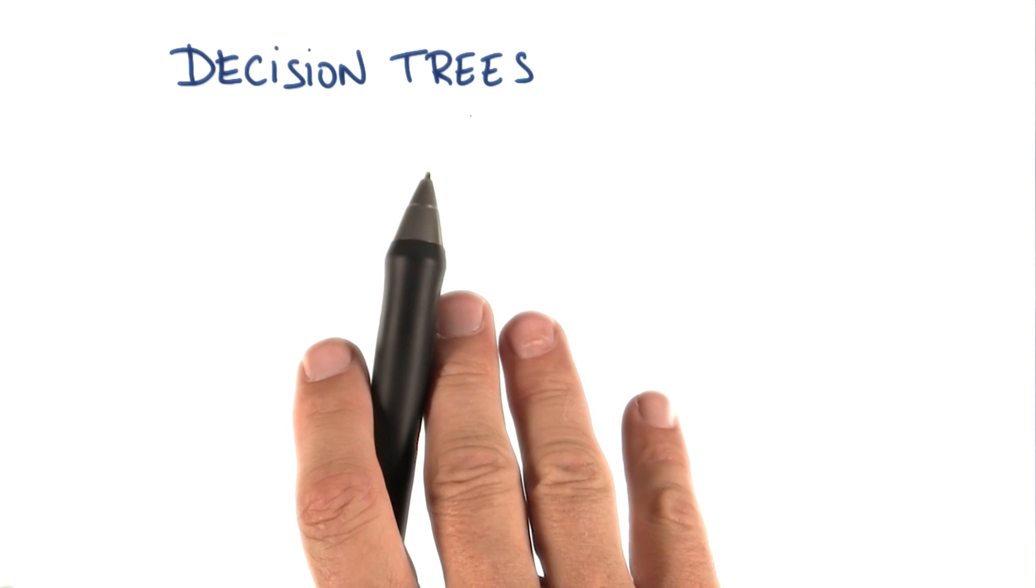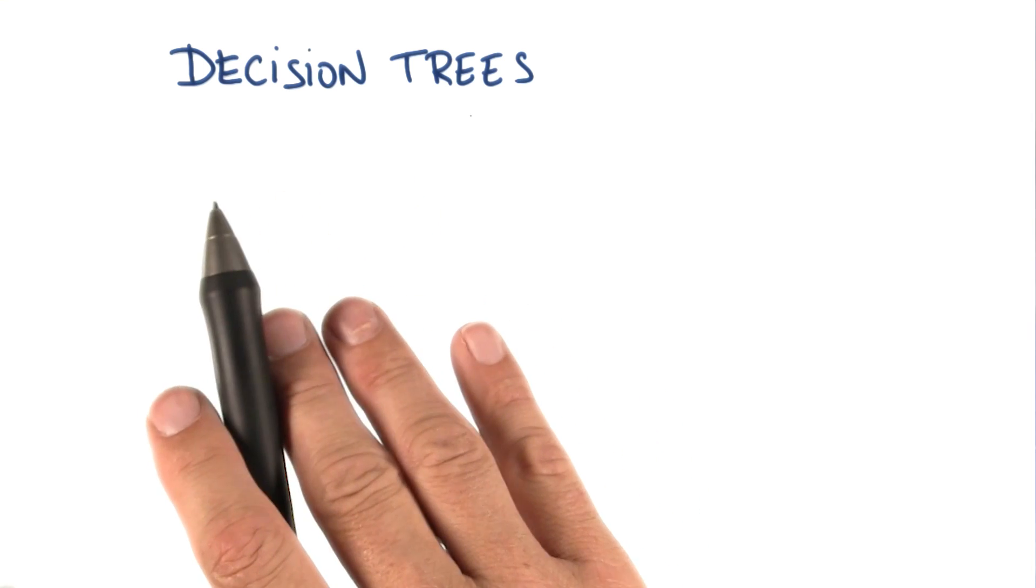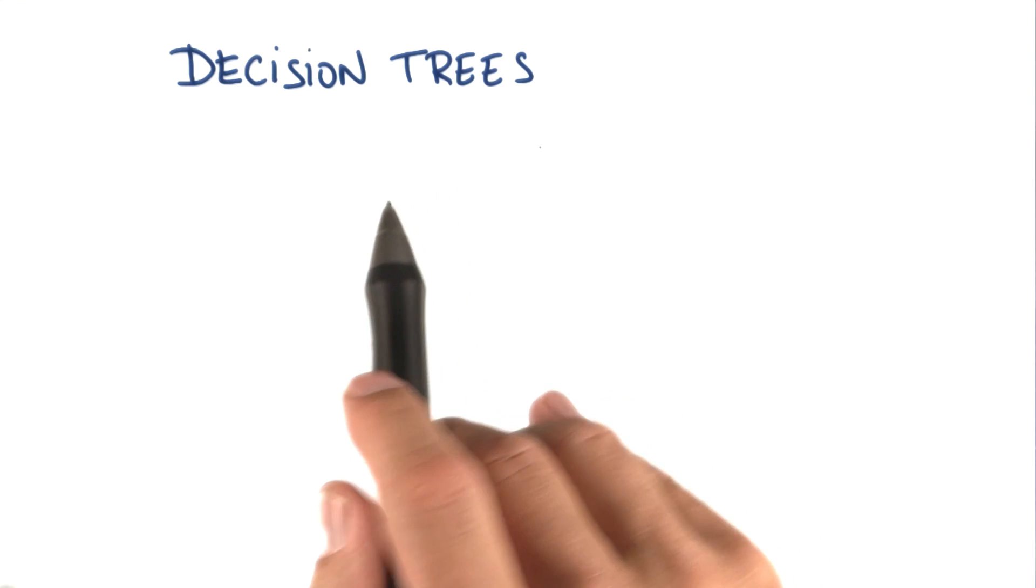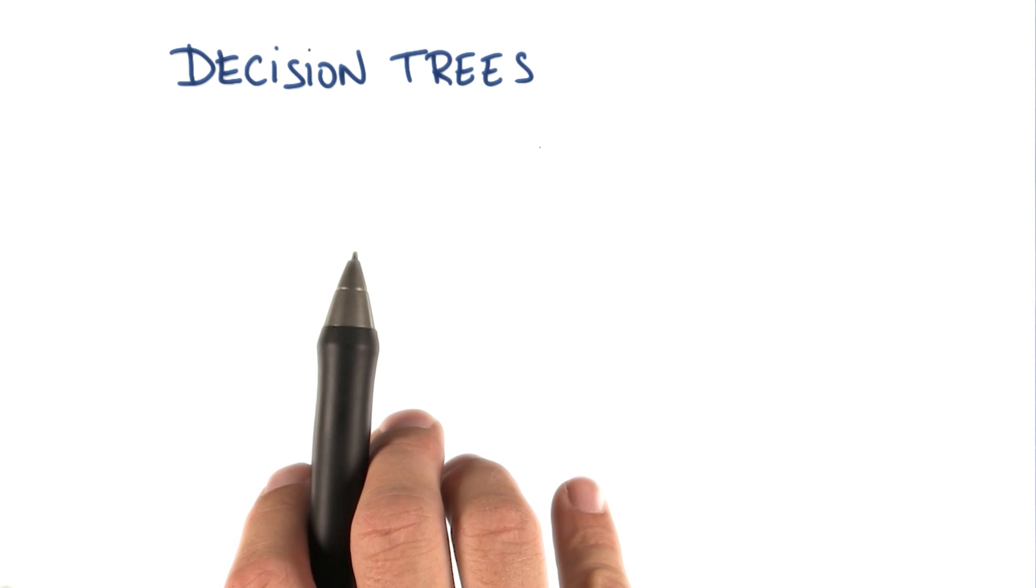Decision trees use a trick to let you do nonlinear decision making with simple linear decision surfaces. So let's start with an example.